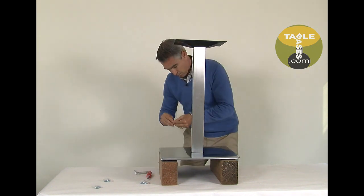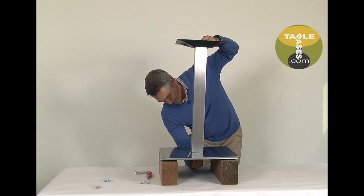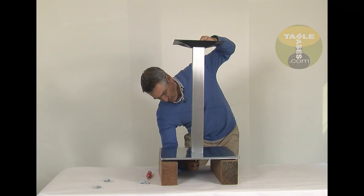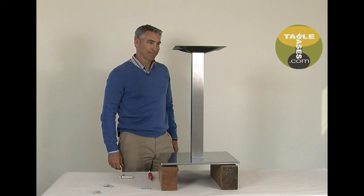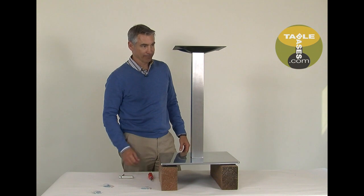Simply thread the lock washer and nut onto the rod and tighten with the provided wrench. Make sure it's good and tight. Double check that the tabs at the top and bottom of the column are in the notches.